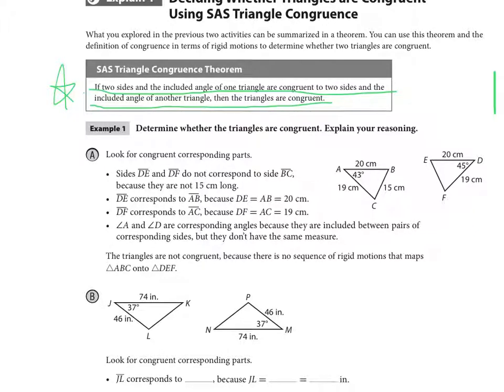So if we look here, I have a side, 19 and 19. I have an angle at 43, I have an angle at 43, and an angle at 45, and then I have a side at 20 and a side at 20. But these two things are not congruent. And so these triangles are not congruent.